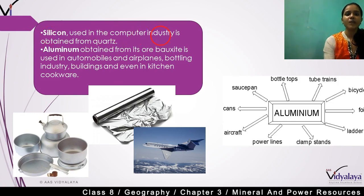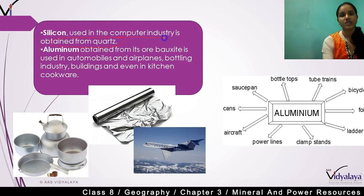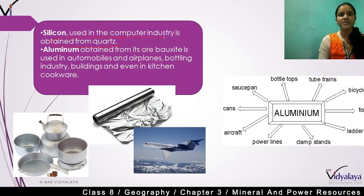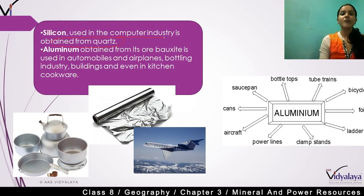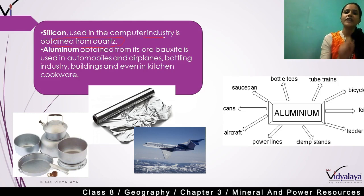Silicon, used in the computer industry, is obtained from quartz. Quartz is another type of mineral from which we obtain silicon, which is used in electrical parts and the computer industry.